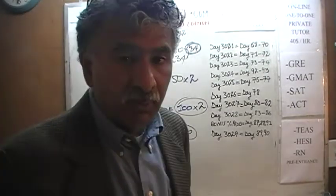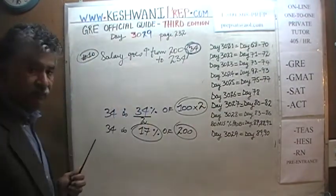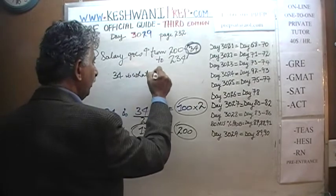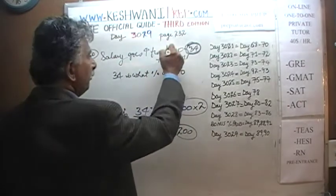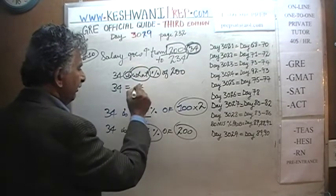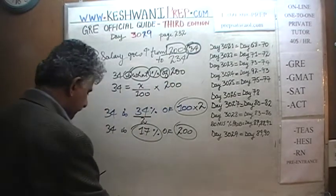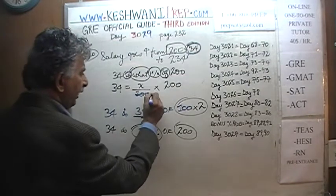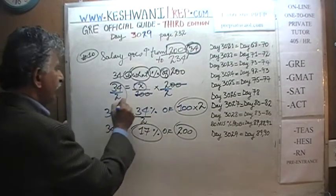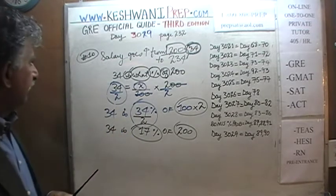If you insist, we can also do it the classical way by setting up the equation: 34 equals x over 100 times 200. Divide top and bottom by 100, cancel the zeros, and you get 2x equals 34. Divide both sides by 2 and x equals 17. So x is 17%.